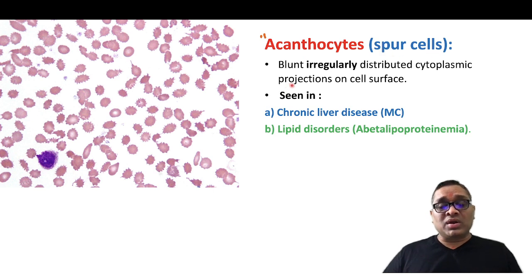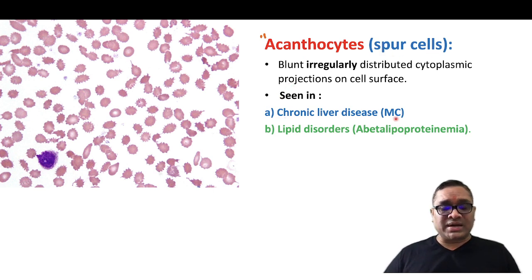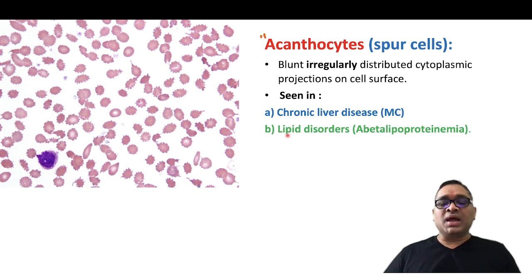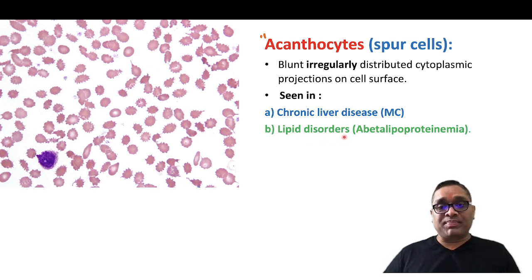Where will you find them? Acanthocytes are seen in chronic liver disease, which is the most common cause of acanthocytosis. They can also be seen in lipid disorders like A-beta lipoproteinemia.